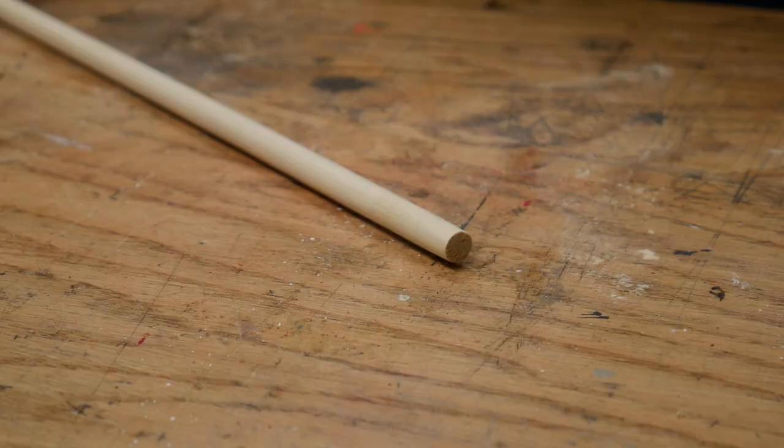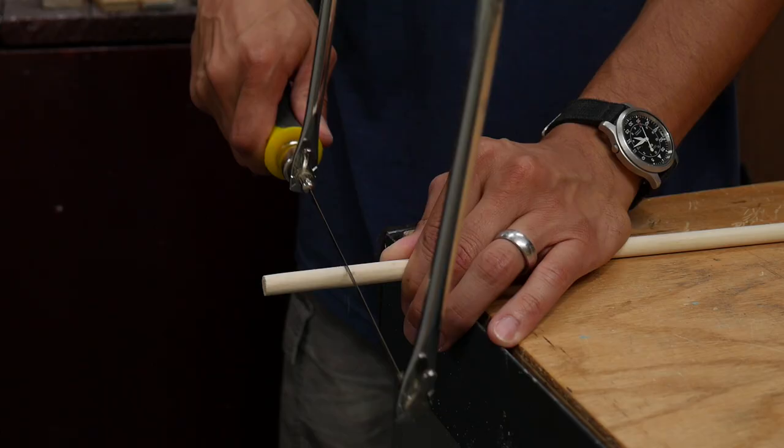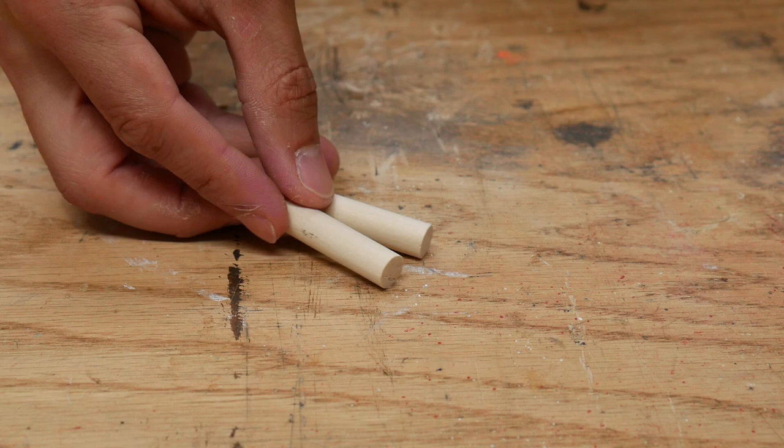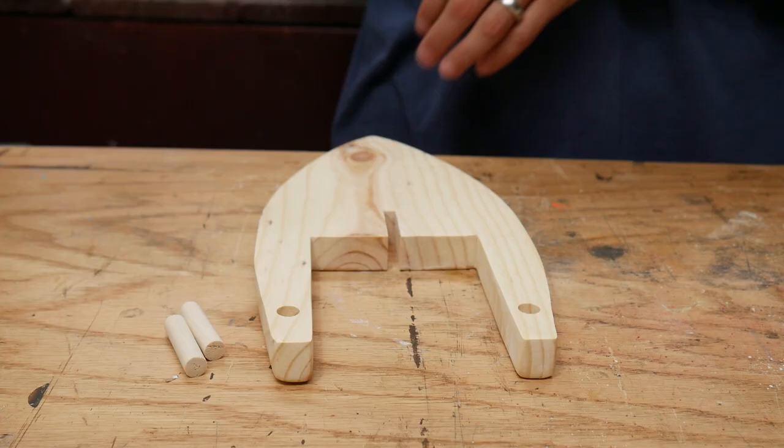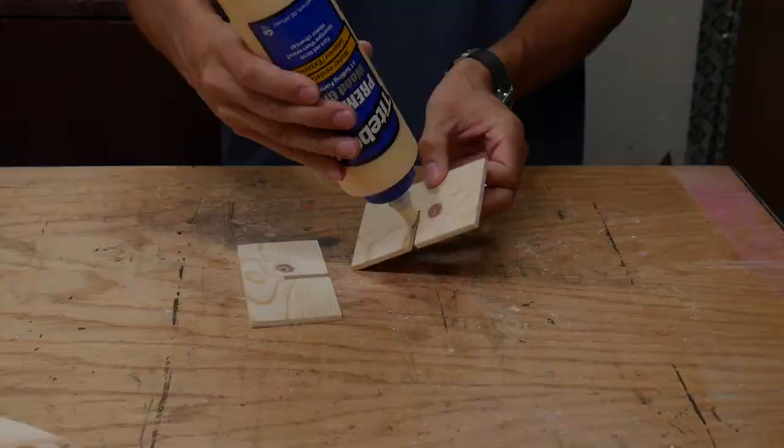I got a piece of three-eighths inch dowel and cut two pieces with a coping saw that were each about one and a half inches long. Then I glued these posts into the holes at the stern of the boat. I also glued the two paddle pieces together to make the paddle.